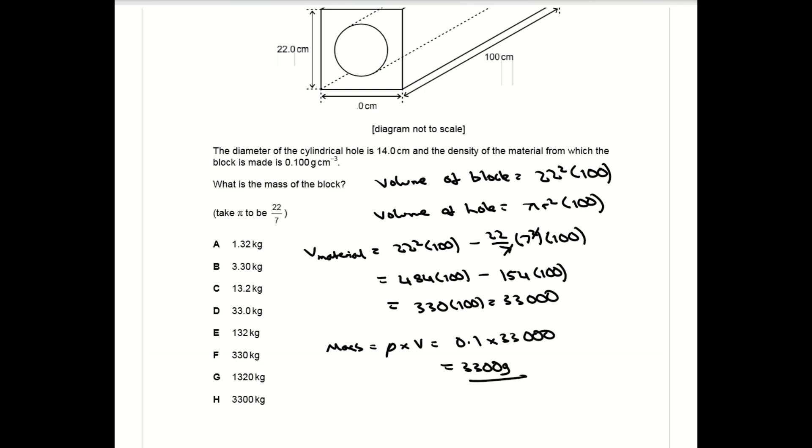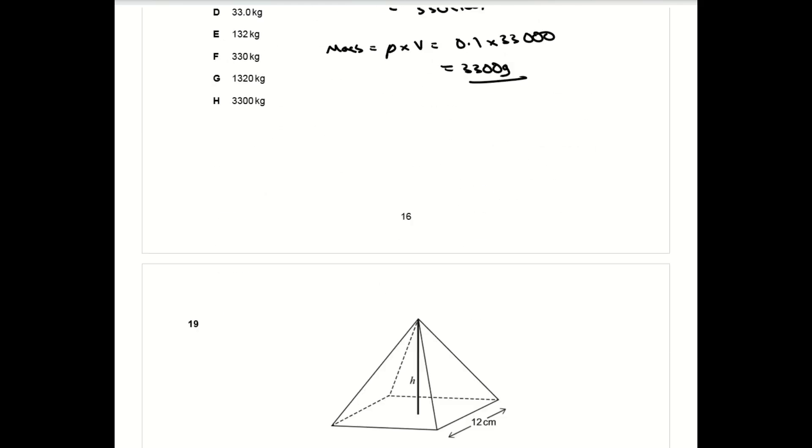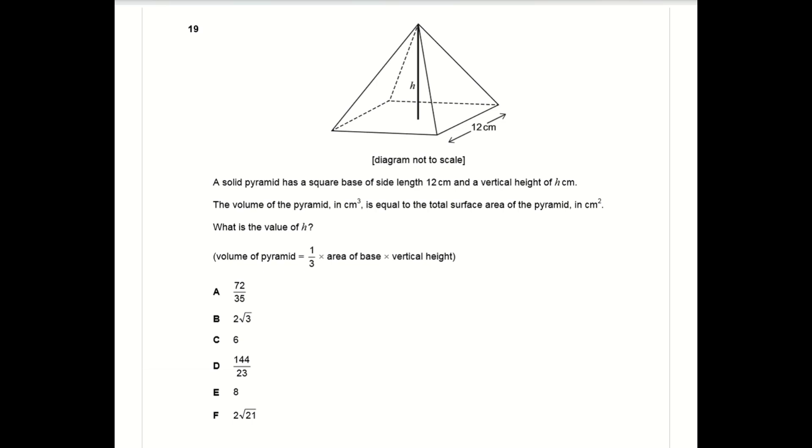In question 19 you're asked to work out the vertical height h of a solid square base pyramid, and you're also told that the volume of the pyramid is equal to the total surface area. The volume is a third times 12 squared, which is the area of the base, times h. The total surface area is the area of the base 12 squared plus four times the area of each triangular face.